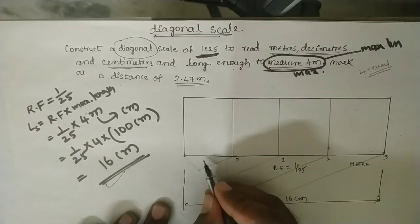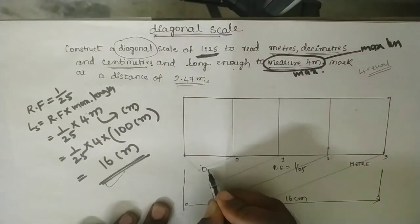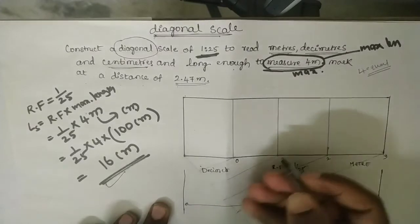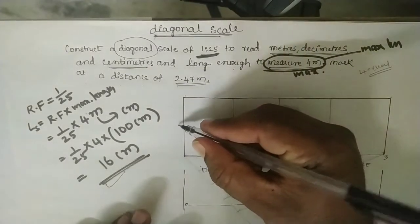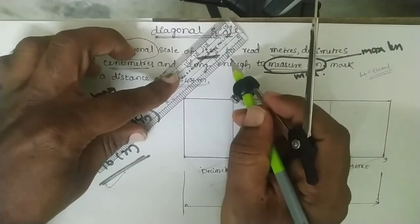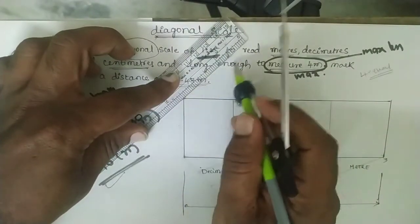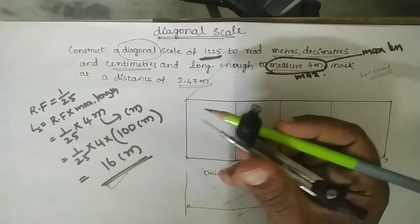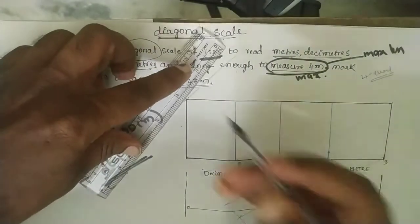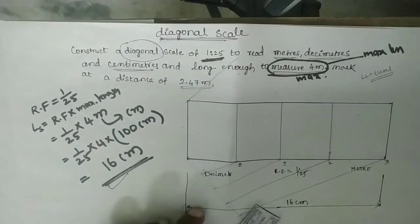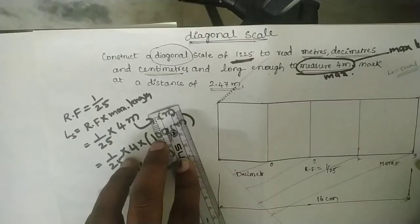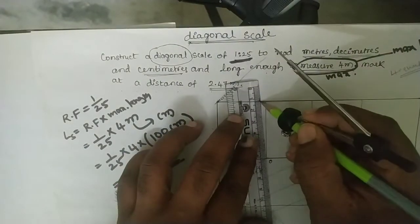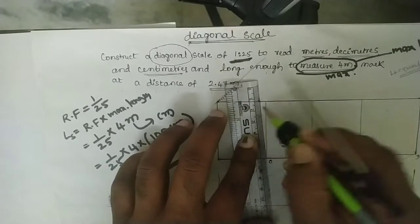Divide the first part into ten equal divisions so that each division may represent one decimeter. We know that one meter equals ten decimeters. Use the line dividing method to bisect the first division into ten equal parts for the diagonal scale.